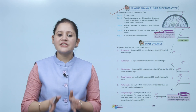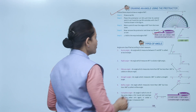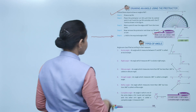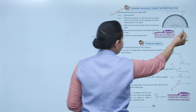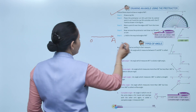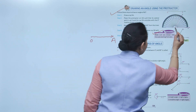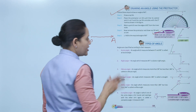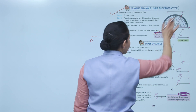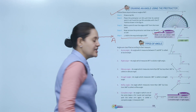Remember: always read the scale starting from 0. To make angle AOB of 60 degrees, first draw ray OA. Take the protractor with the center point on the vertex so this line coincides. From 0 degrees using the inner scale, go to 60 degrees and mark point B there. Join B to O to get angle AOB of 60 degrees.